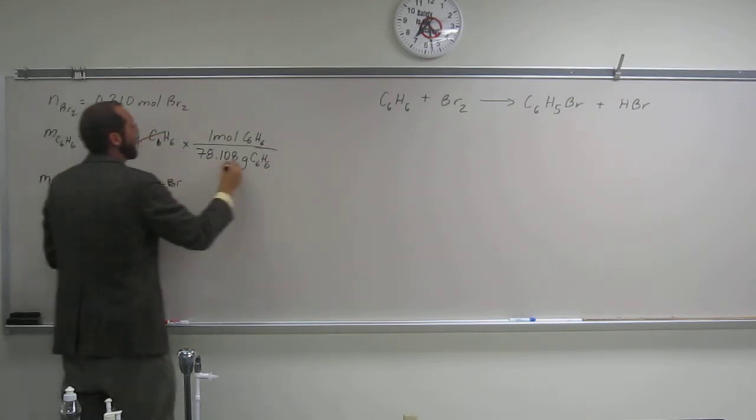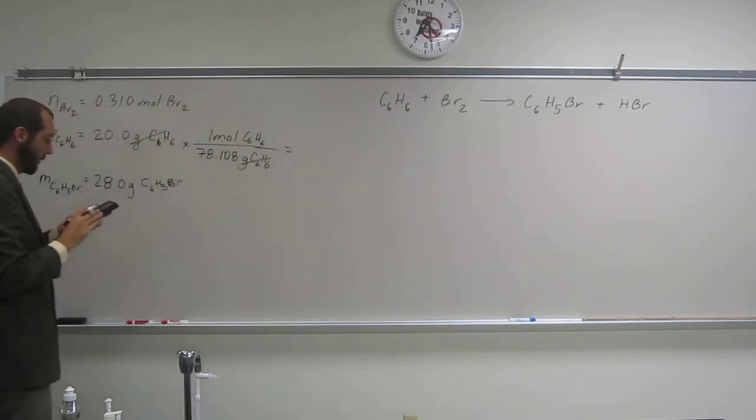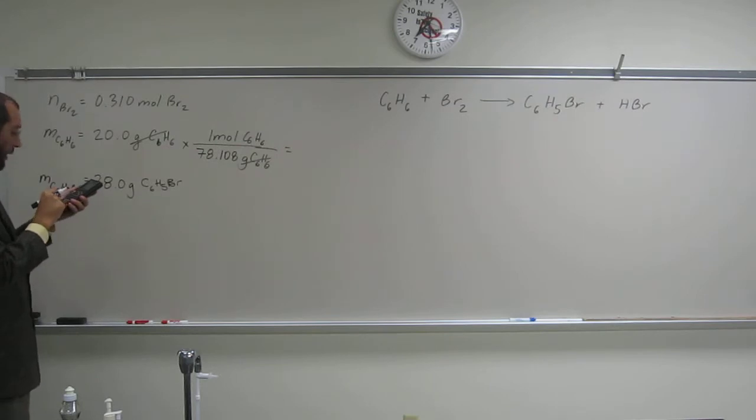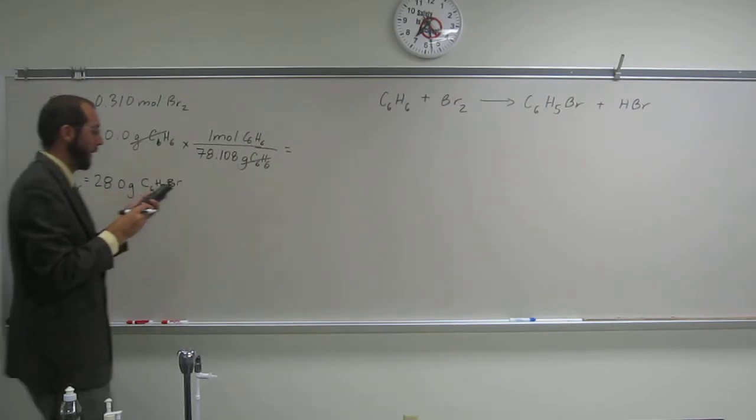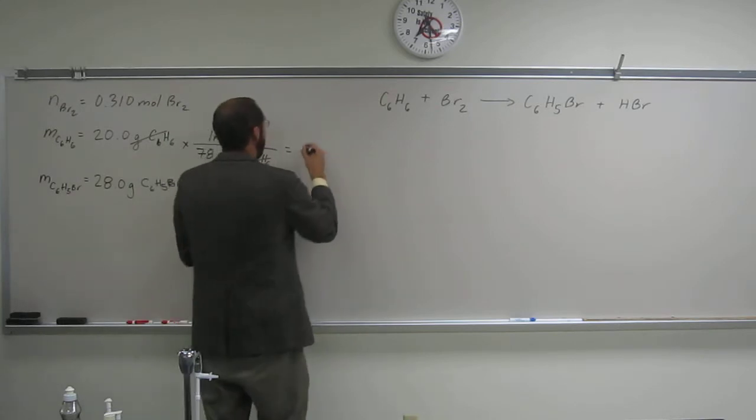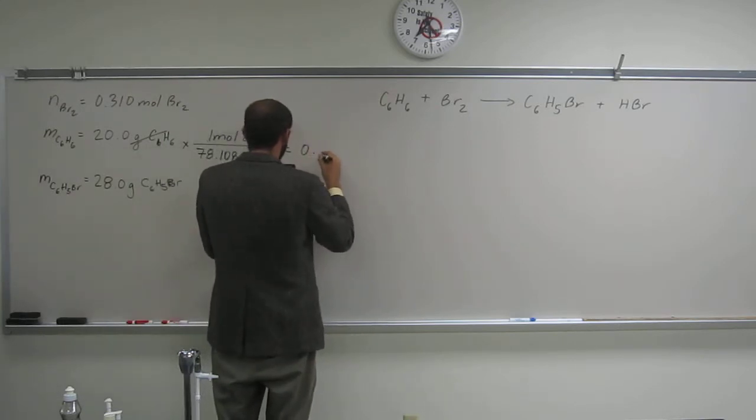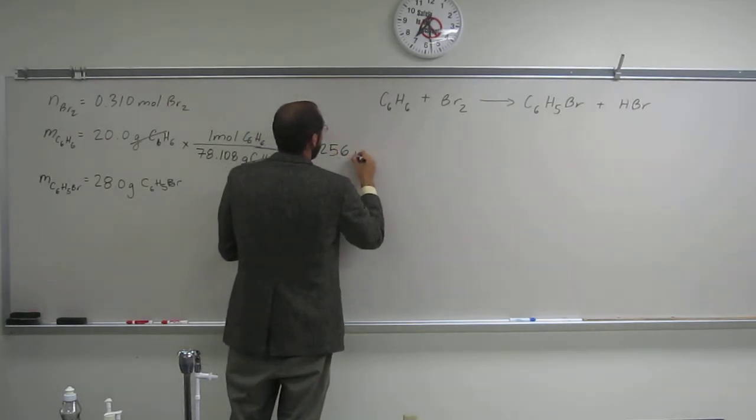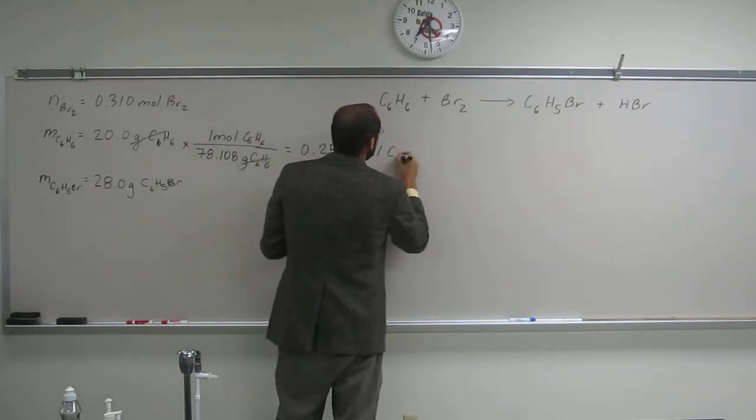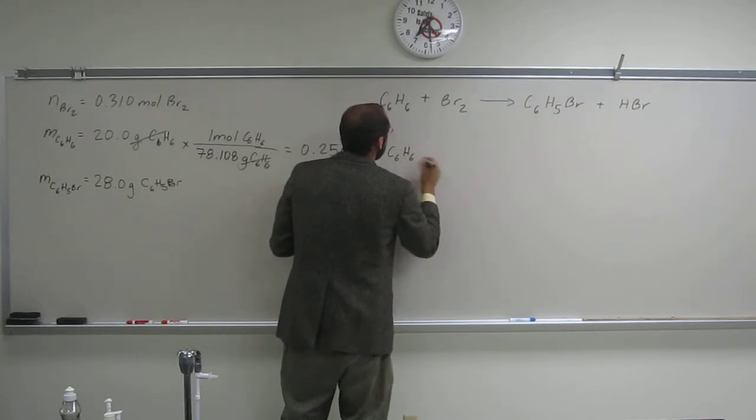So that will cancel that out. And that should give us the number of moles of benzene. So 20 divided by that answer, 78.1. So 0.256 moles of C6H6.